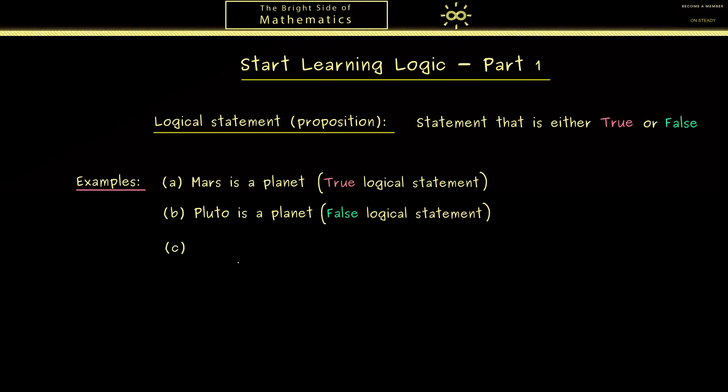Therefore I prefer examples in mathematics because there all definitions are given. For example we could choose the sentence 1 plus 1 is equal to 2. Of course here you also have to know what the numbers mean, what the plus sign means and what the equality sign means. But if you know these things you know this is a true logical statement.